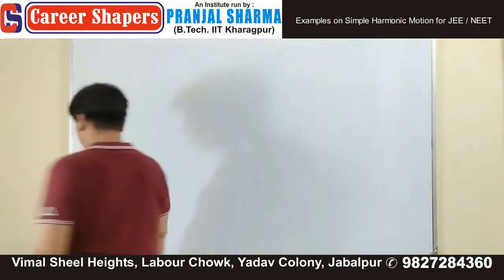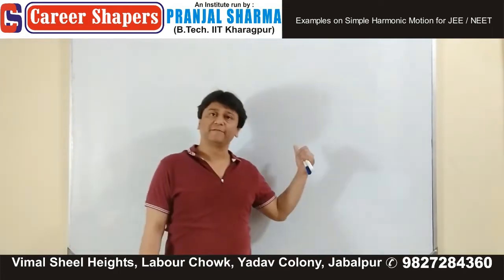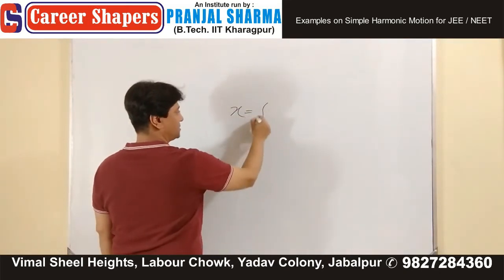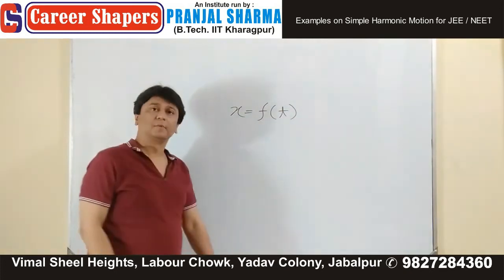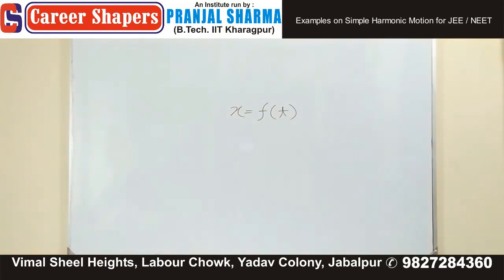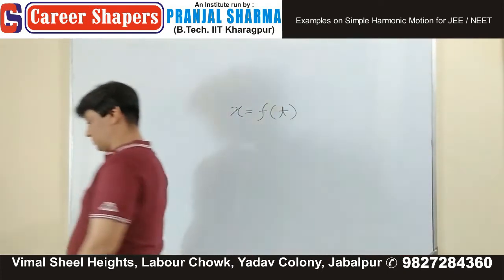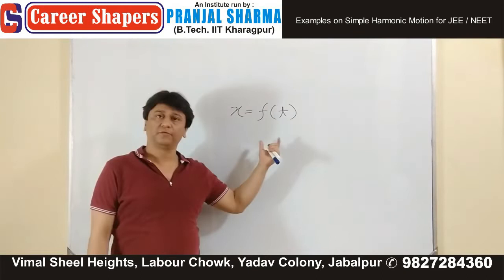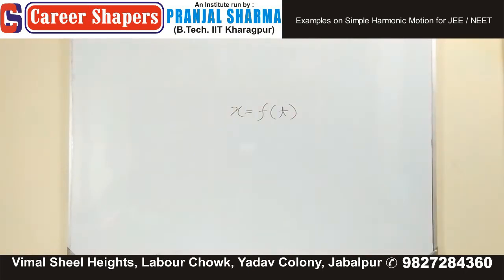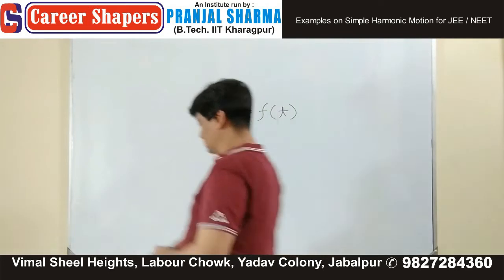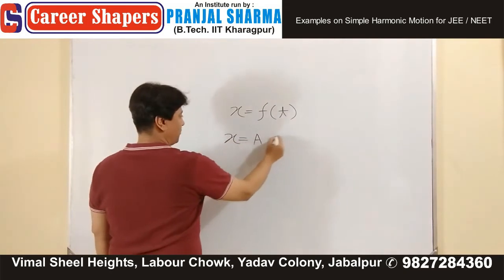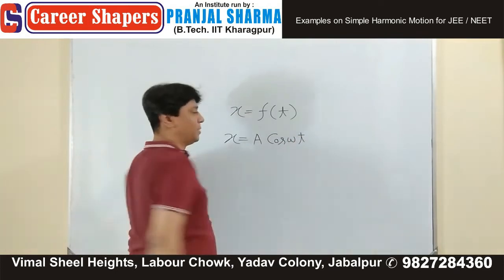First, when I say the object starts from positive amplitude, what is x as a function of time? The first thing you need to realize is that x will be given by A cos(ωt).